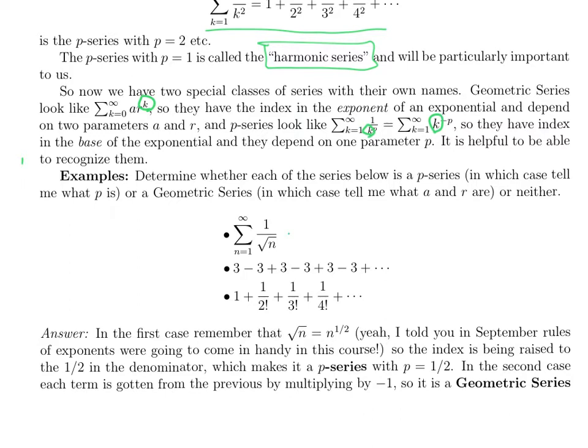In the first case, 1 over square root of n is the same as 1 over n to the 1 half. That is the index raised to a power. So that is a p-series with p equals 1 half.